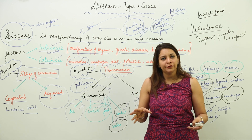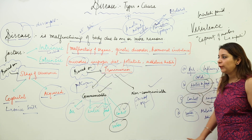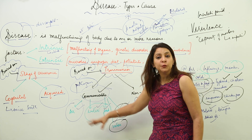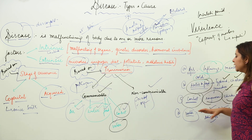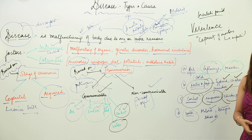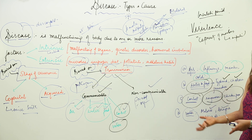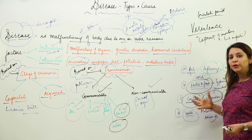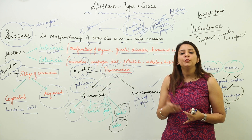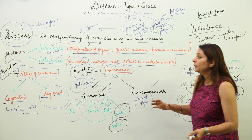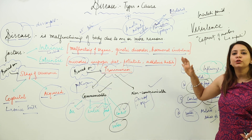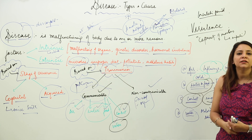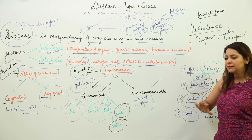So now you are familiar with intrinsic and extrinsic factors, congenital and acquired diseases, and communicable and non-communicable diseases along with how they spread. Next, we are going to focus on specific examples — the symptoms and incubation periods for different diseases. Please go through these basics first, and then we will look at the symptoms and incubation periods in the next section.